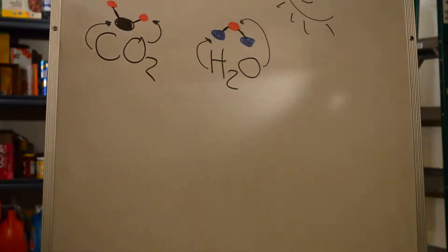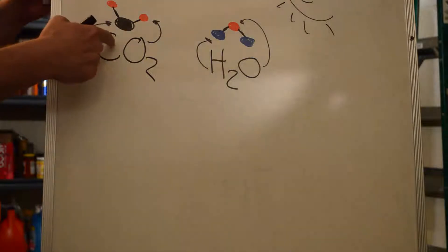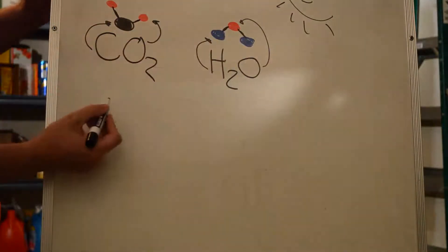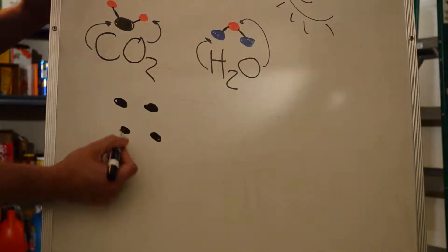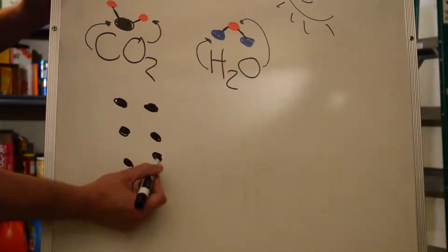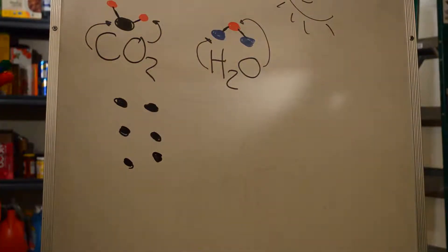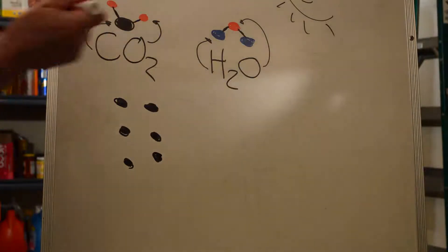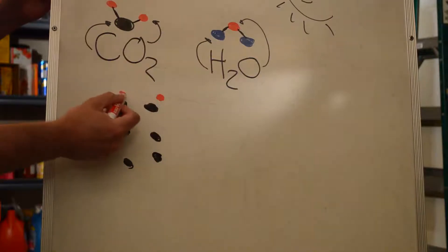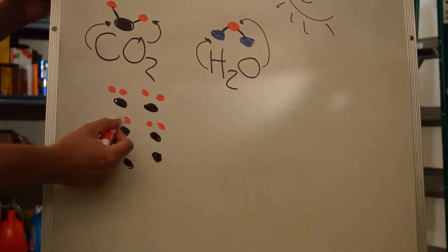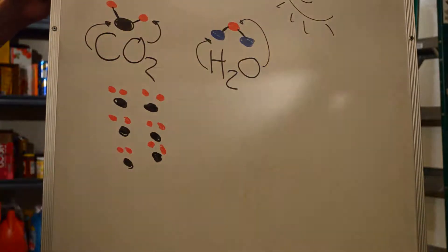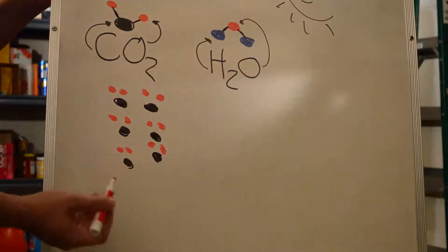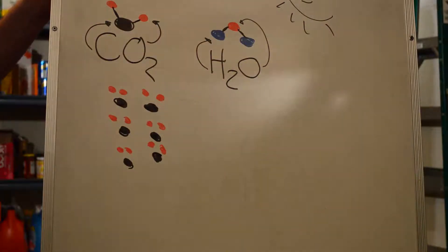When the plant goes shopping to make glucose, it needs six of these and six of those. And so if I drew one, two, three, four, five, and six of those, put my carbon away for a second. And then each one of those has two of the oxygens on it.